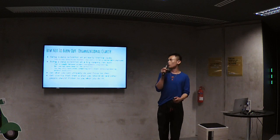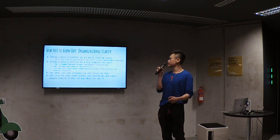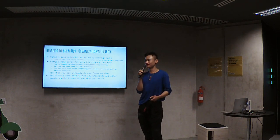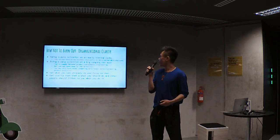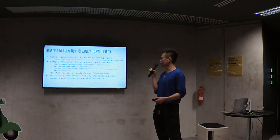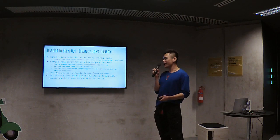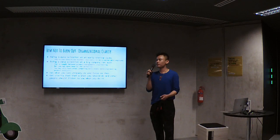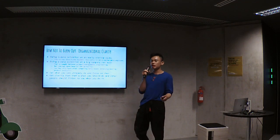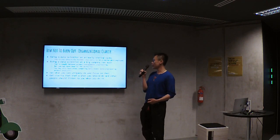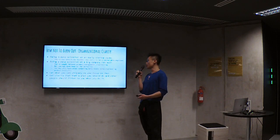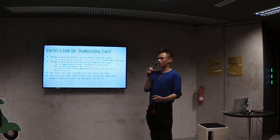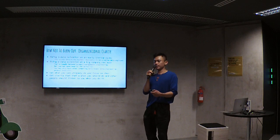Another thing you could do is ask for organizational clarity. Being a data scientist at an early startup sucks because you're too late to be a founder but too early to be a comfortable employee. Being a data scientist at a big company can also suck because you're often caught between product management and engineering with none of the authority. You can ask yourself what data science as an organization can uniquely do, and focus on those things. Once you get clarity on what you should do, other people should listen to you when you are the authority on that.